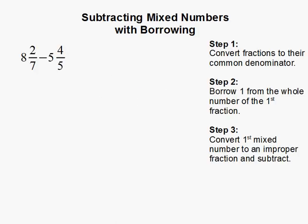Subtracting mixed numbers with borrowing. In this problem, we have 8 and 2 sevenths subtract 5 and 4 fifths. Step 1: Convert fractions to their common denominator.